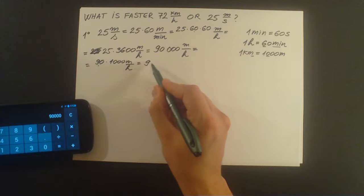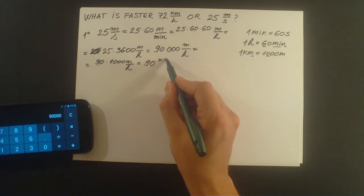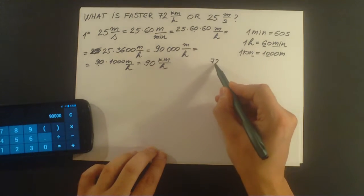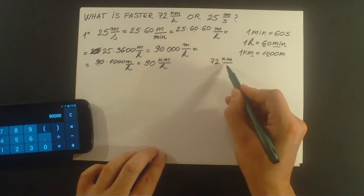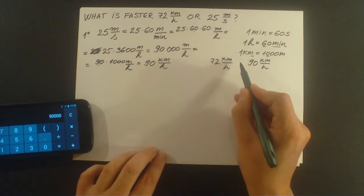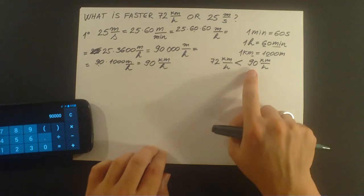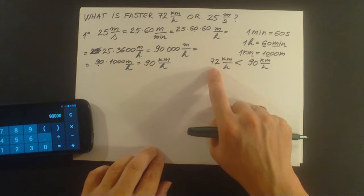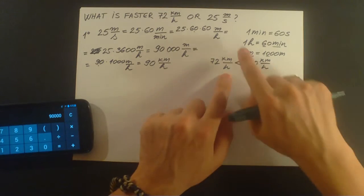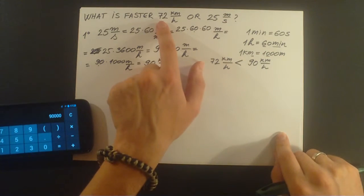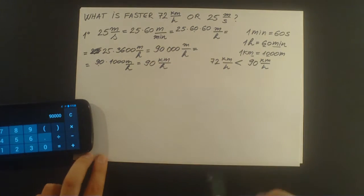Now it's very easy to see what is faster: 72 kilometers per hour or 90 kilometers per hour. As we can see, 90 kilometers per hour is larger than 72 kilometers per hour, which means that 25 meters per second is faster than 72 kilometers per hour.